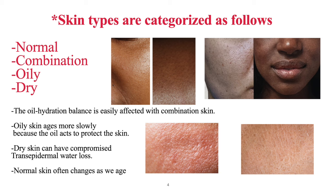Skin types are categorized as follows: normal, combination, oily, and dry. The oil-hydration balance is easily affected with combination skin. Oily skin ages more slowly because the oils act to protect the skin. Dry skin can have compromised transepidermal water loss. Normal skin often changes as we age, so if you currently believe you have normal skin, know that it could possibly change over time — which is why monthly facials as preventative care are extremely important.